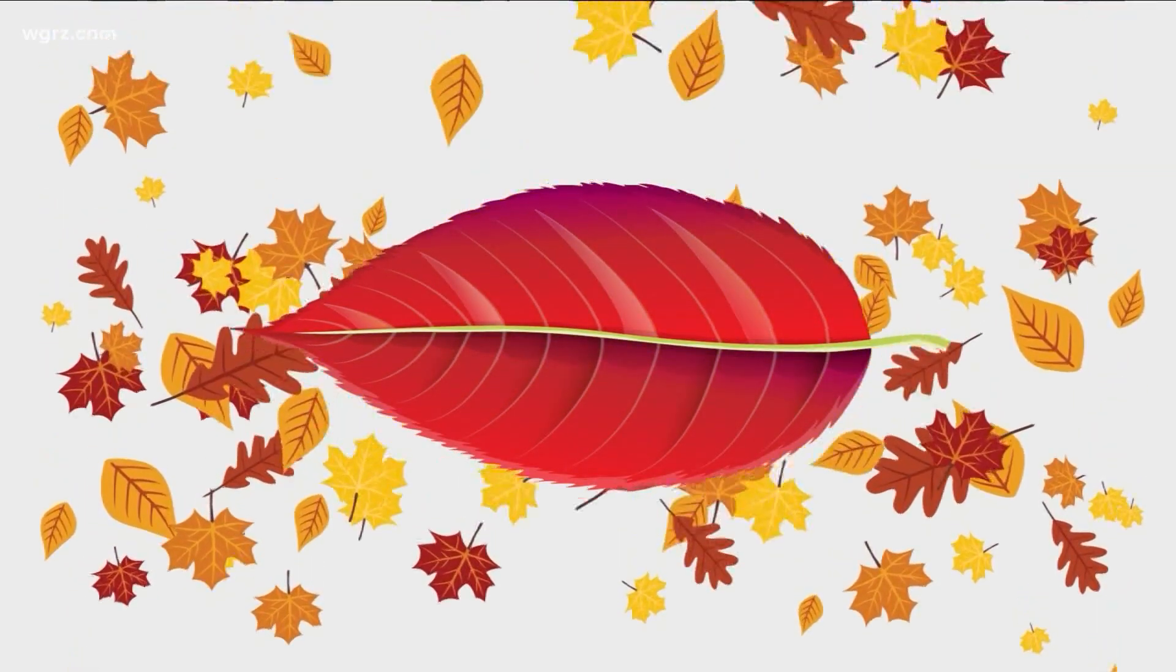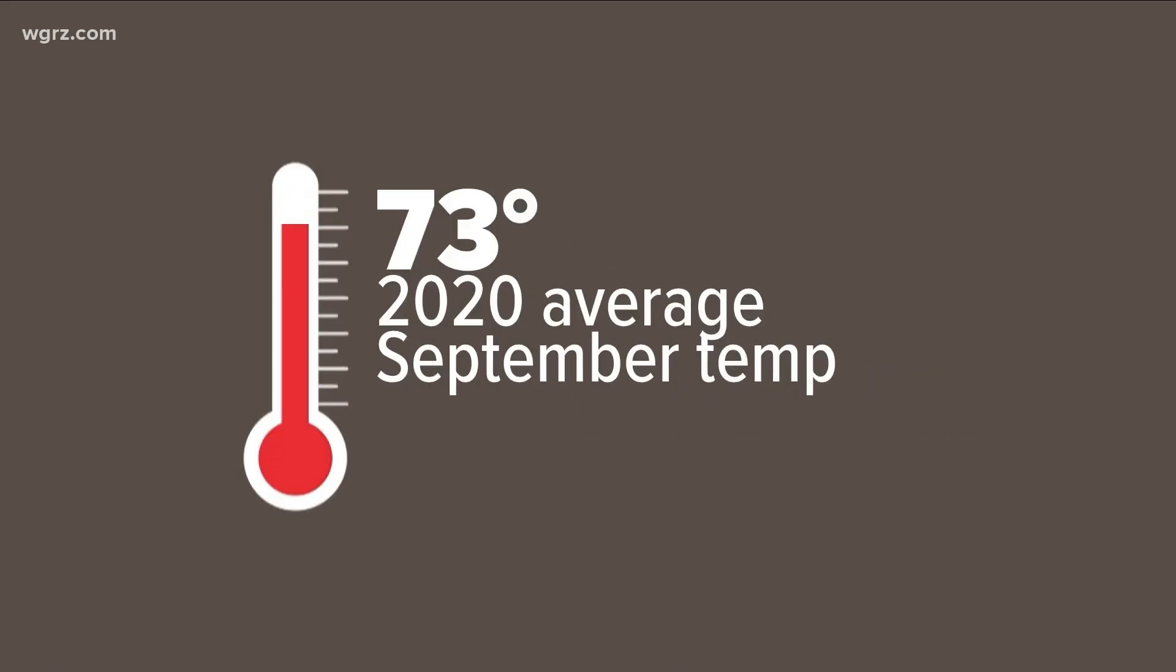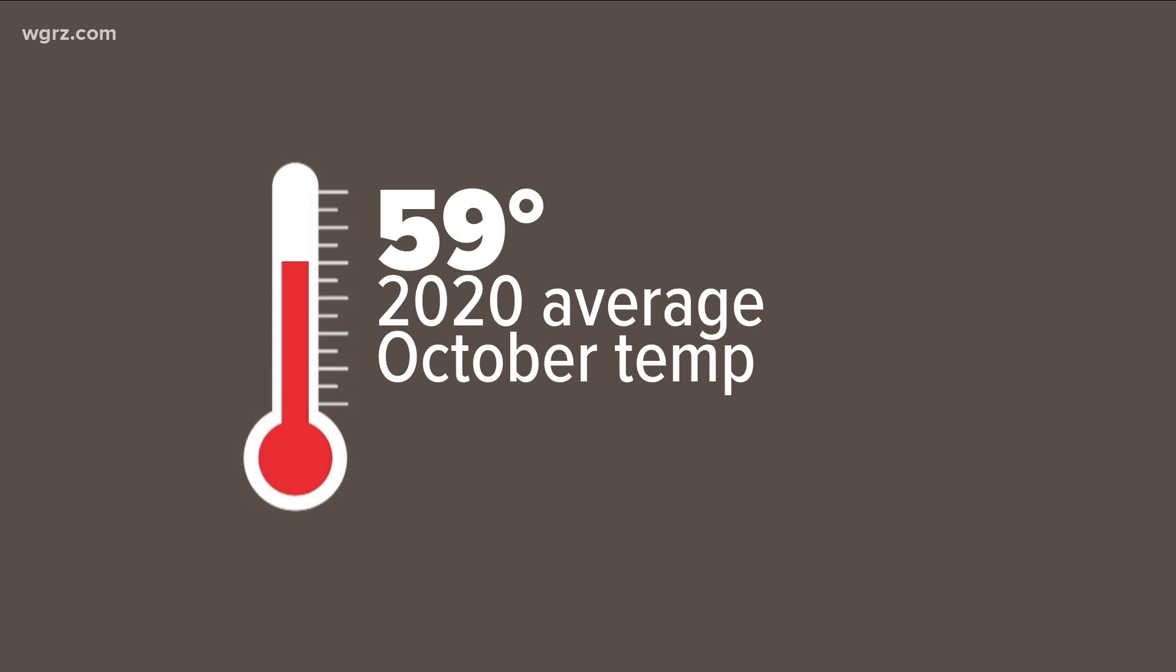Sunlight isn't the only thing that affects changing colors. So does cooler temperatures. That has an effect on leaves too. Last year, our average temperature for the month of September was 73.3 degrees. Get this, it dropped to 59.2 in October.